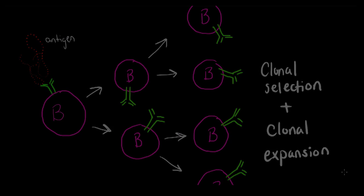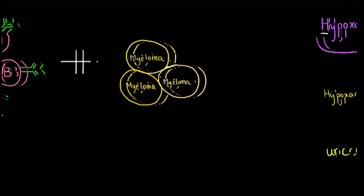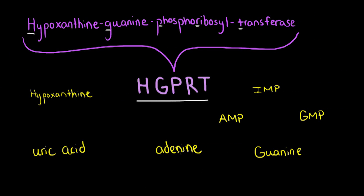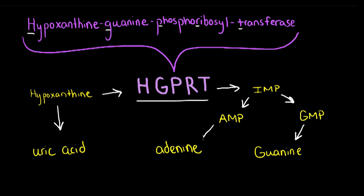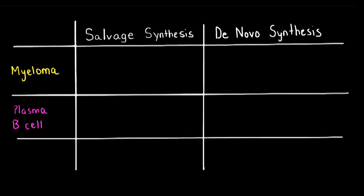Upon recognition of the antigen and its adjuvant, these naive B cells would activate and be selected and propagated through the processes of clonal selection and clonal expansion. Next, the plasma B cells are extracted from the spleen and combined with myeloma cells. These myeloma cells are cancerous plasma cells that have lost the ability to synthesize an enzyme called hypoxanthine-guanine phosphoribosyl transferase, or HGPRT. This enzyme uses the amino acid hypoxanthine to create guanine in the recycling pathway, or salvage synthesis of nucleic acids. Normal B cells, however, will still retain this enzyme, HGPRT.